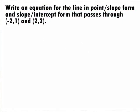In this example, we want to write an equation for the line in point-slope form and slope-intercept form that passes through the points negative 2, 1, and 2, 2.